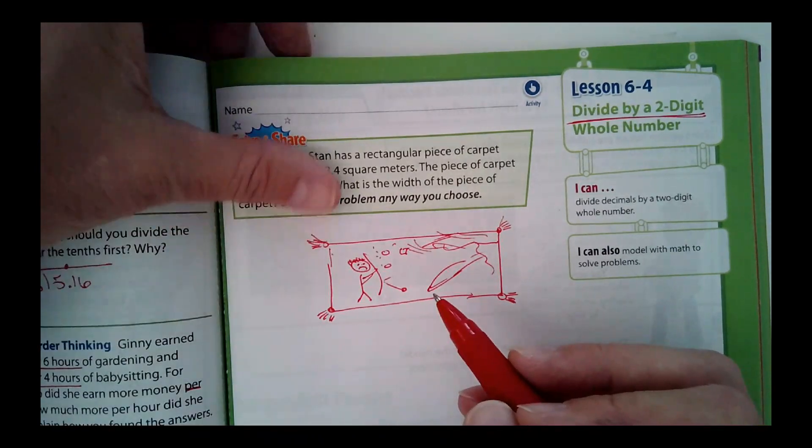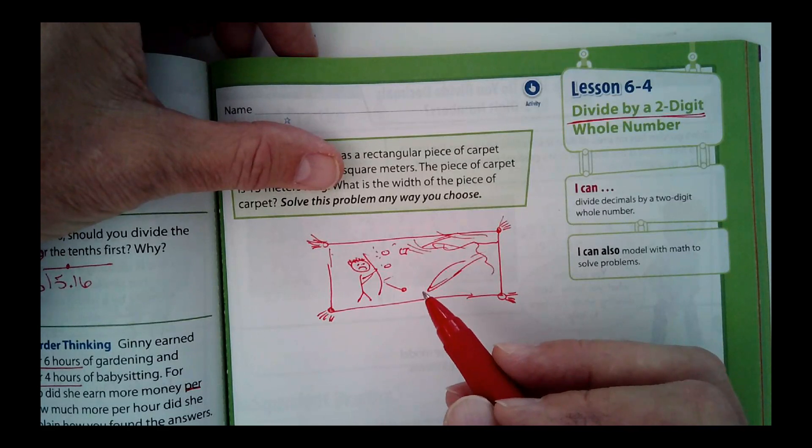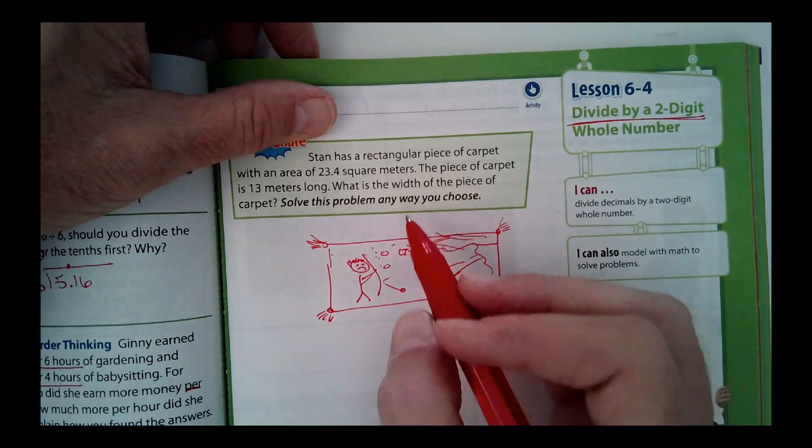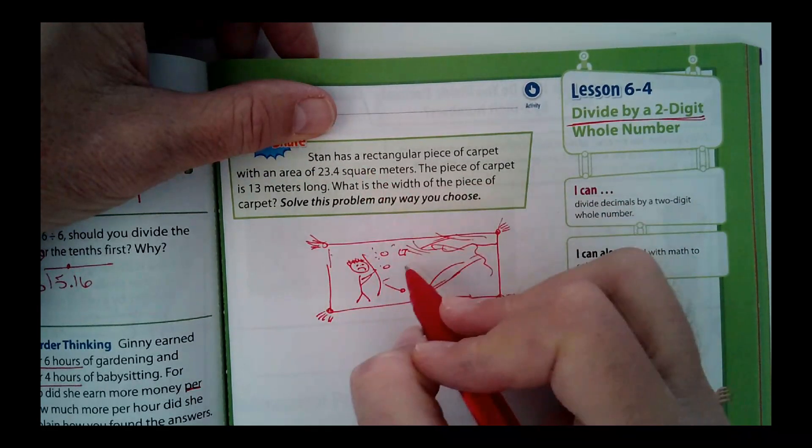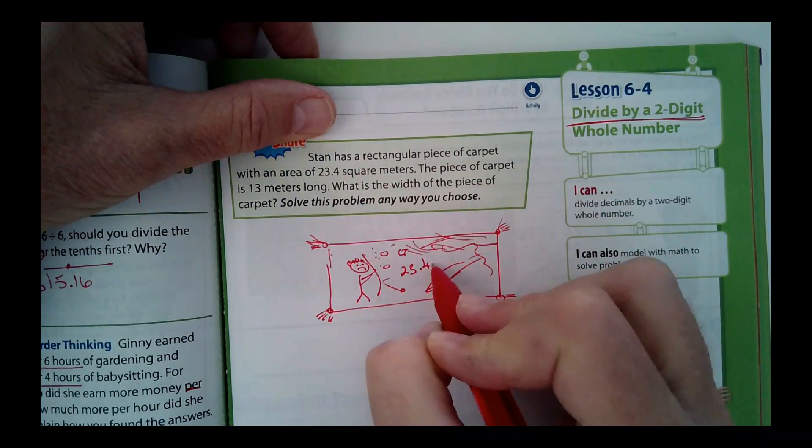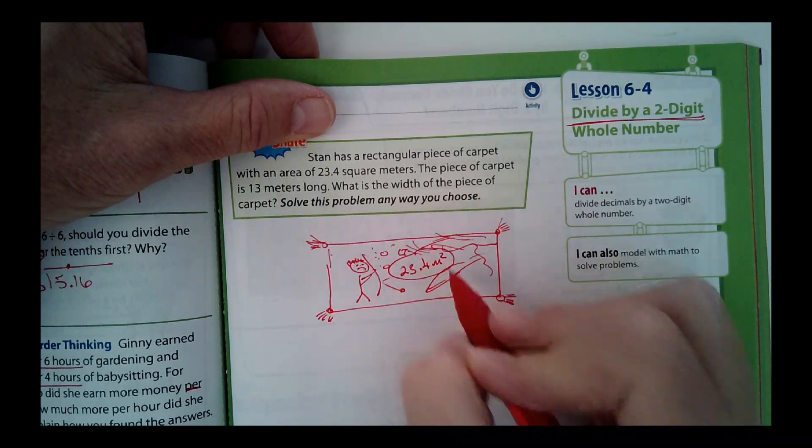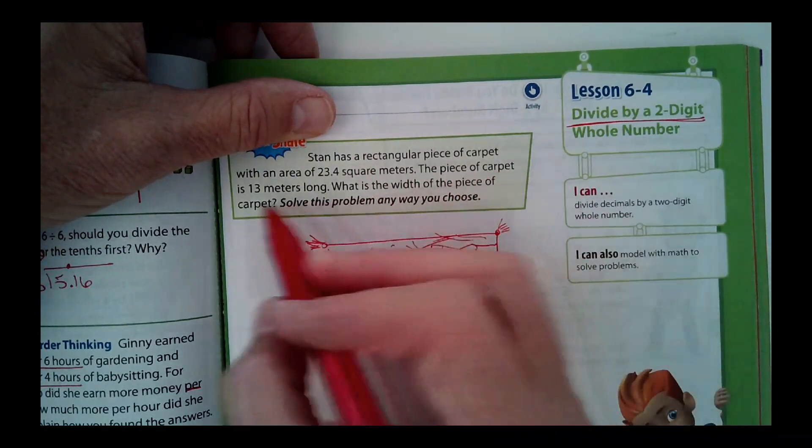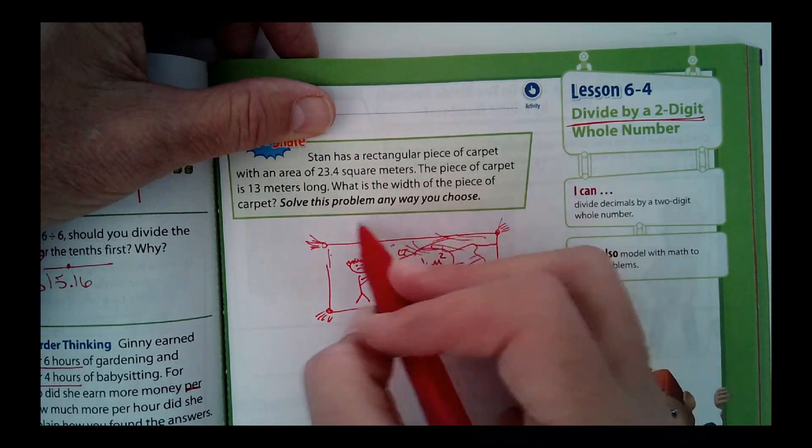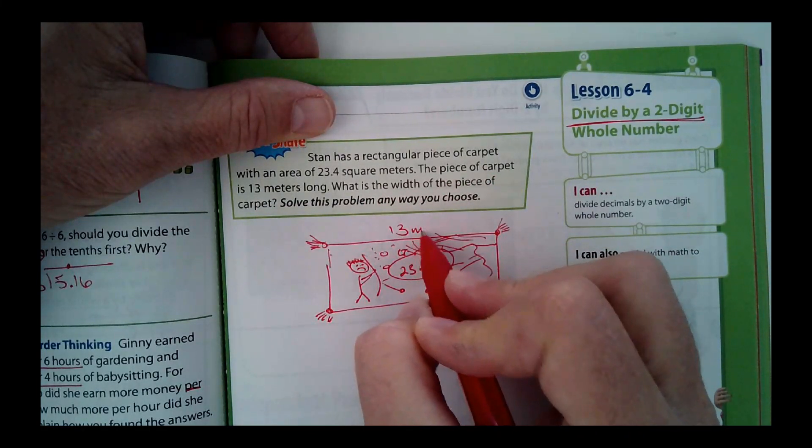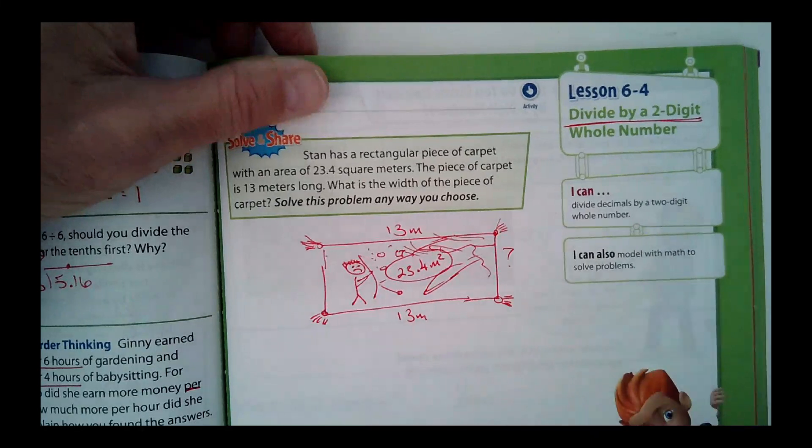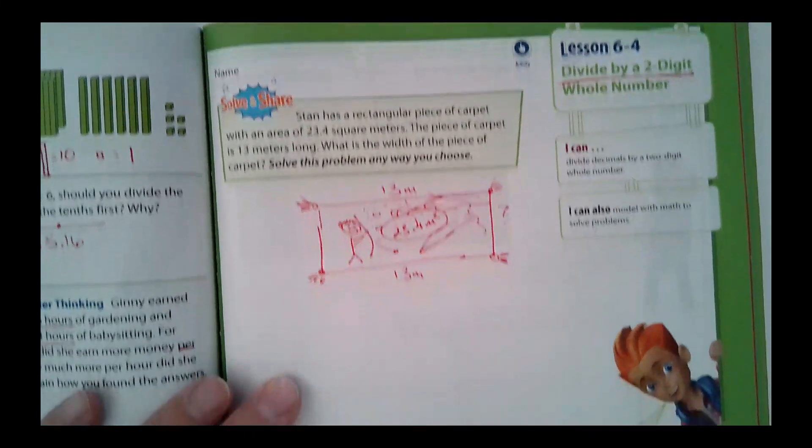So there's Mr. Gonzalez. He's not too happy looking because there is a volcano that erupted. This is a really cool carpet with some awesome designs. The whole area is 23.4 meters squared. I'm going to circle that right there. And it says the piece of carpet is 13 meters long. So if this side is 13 meters, what is this side here? We would need to know this side.